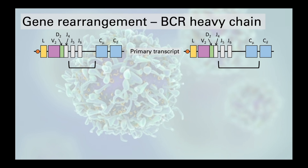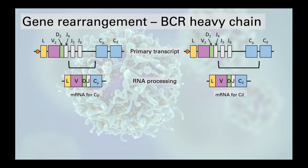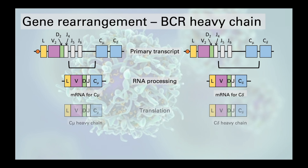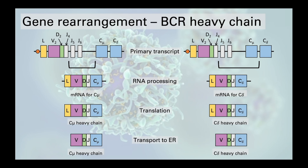The primary transcript contains some additional regions that need to be trimmed out to produce a piece of DNA that can encode a functional heavy chain. This happens during RNA processing, where the regions from the J segment of the VDJ complex to the appropriate constant domain segment are spliced out. In the left-hand image we see the region from J4 to C-mu being removed, and in the right image the region from J4 to C-delta. Through translation and transport to the endoplasmic reticulum, a functional B cell receptor heavy chain is produced, forming the heavy chain of IgM on the left or IgD on the right, as defined by the constant region.